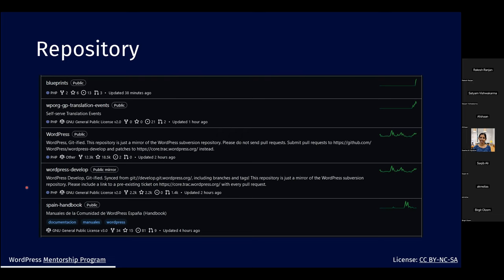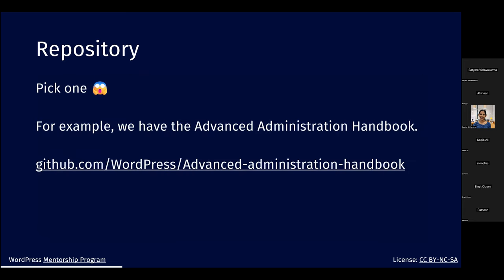Each repository is like a small project. For example, there are the WordPress and WordPress Develop repositories, the Spain Handbook, the WP GP translation events, and the blueprints repository. You need to pick which repository or project you want to participate in. For this example, I'm going to use the Advanced Administration Handbook.